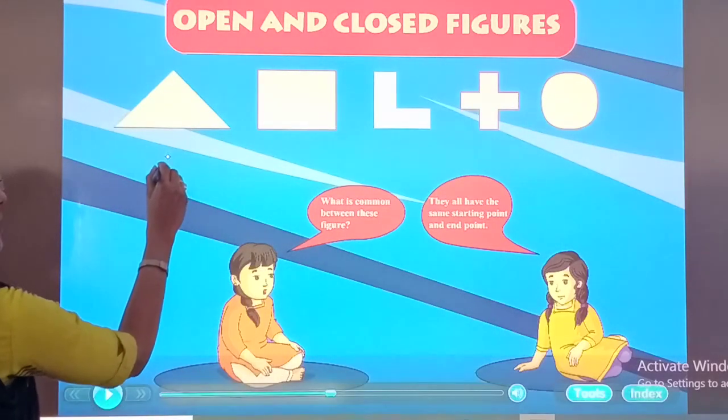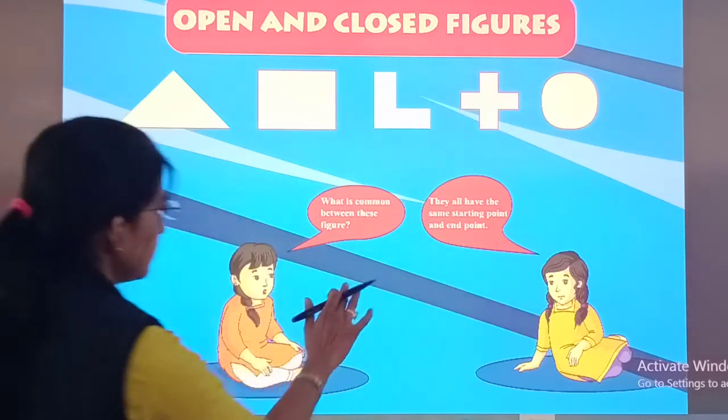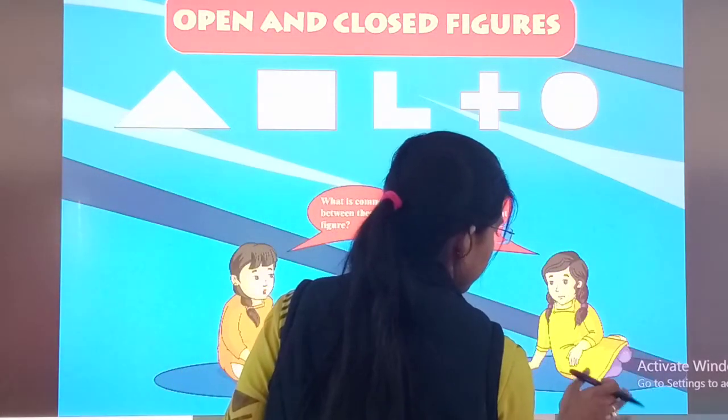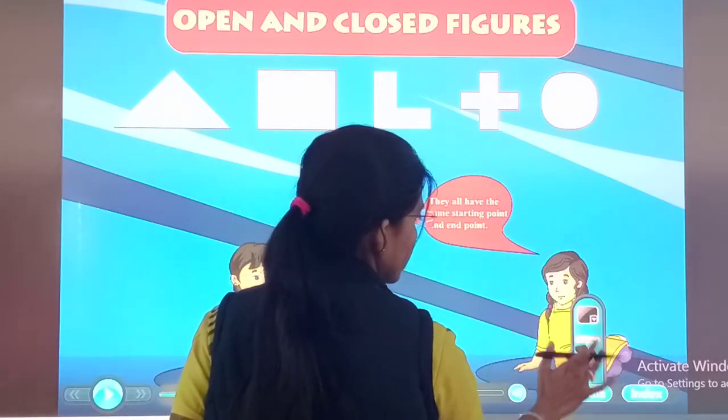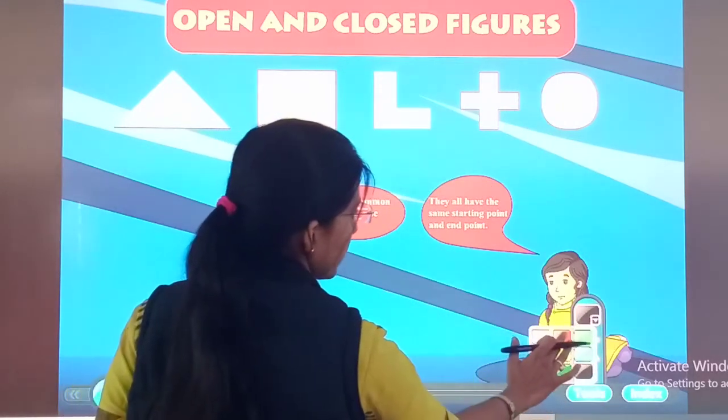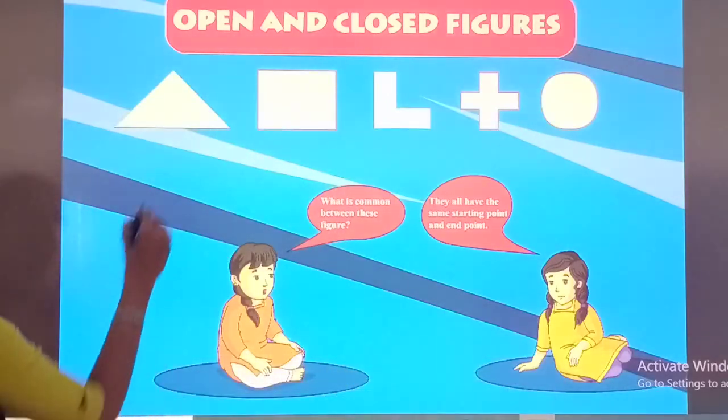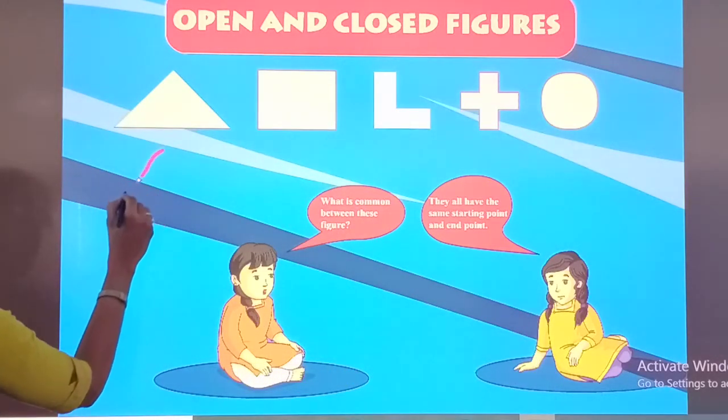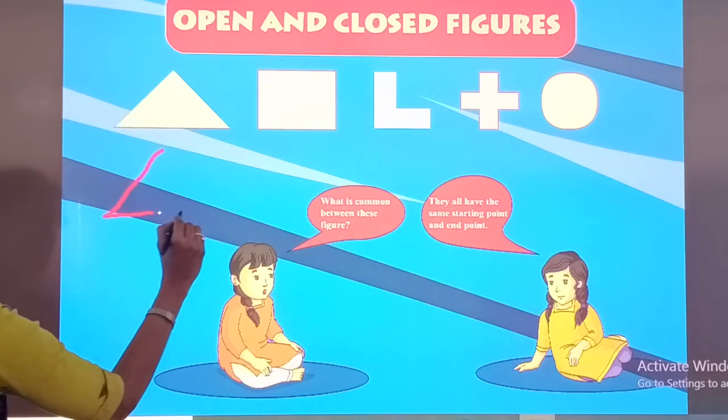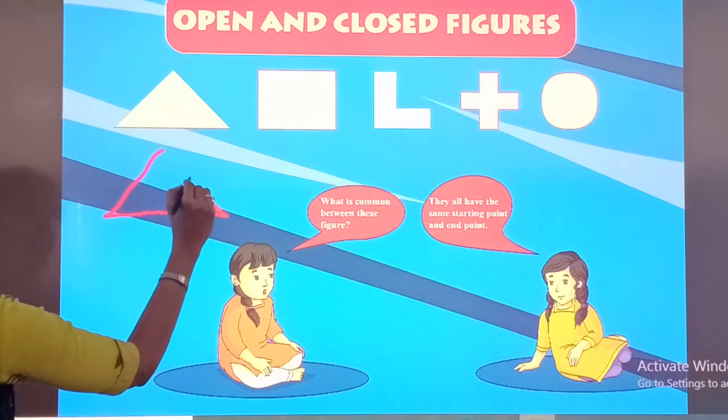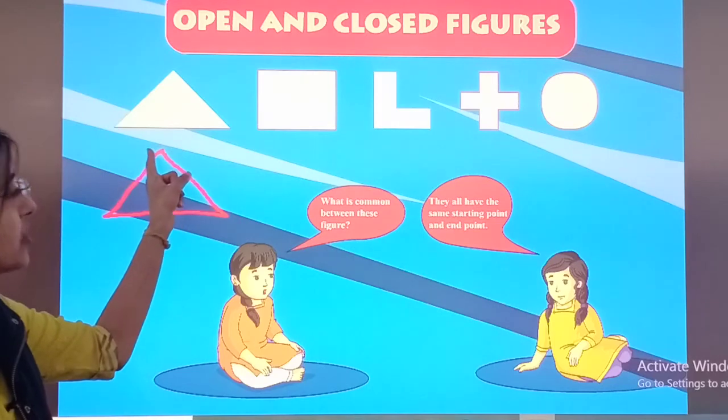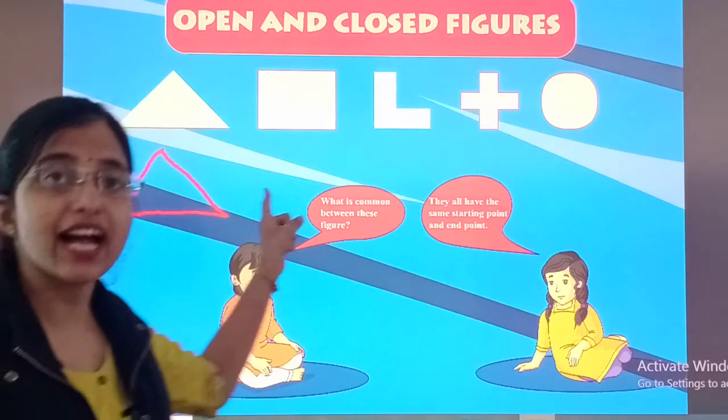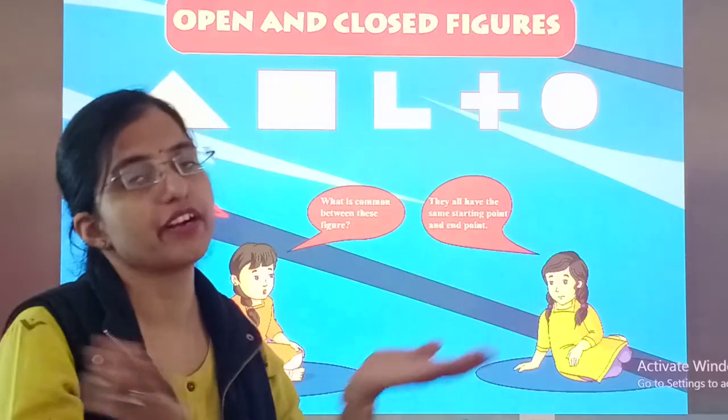See, this is my starting point. Let's make it. Which color should I pick? Okay, I will pick red color. See, this is the starting point, correct? Then, I am making a triangle and now I am completing it. So see, I ended the triangle from where I started it. So, this is a closed figure.